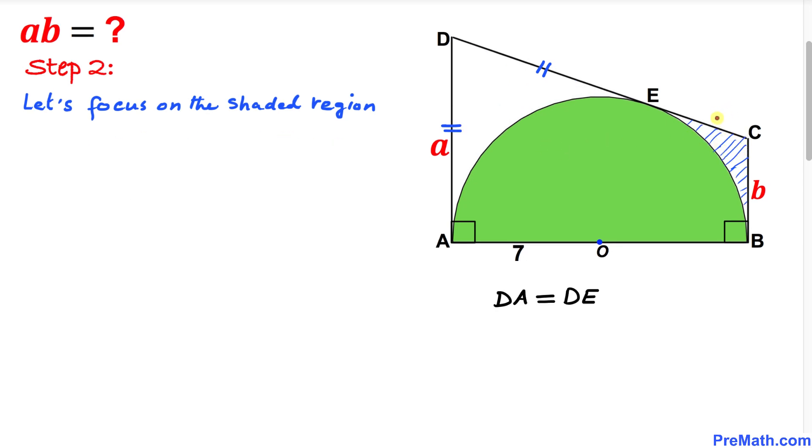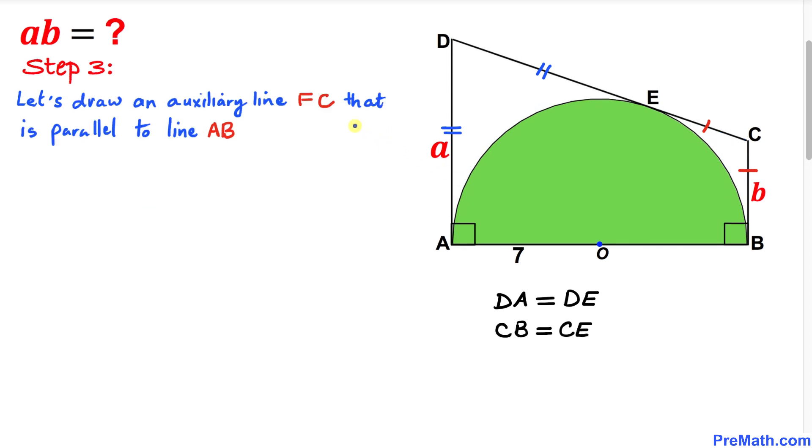Here's our next step. Let's focus on this other shaded region and recall the two tangents theorem once again. According to this theorem, the two tangent segments CB and CE are equal in length. Therefore, we can write CB equals CE.